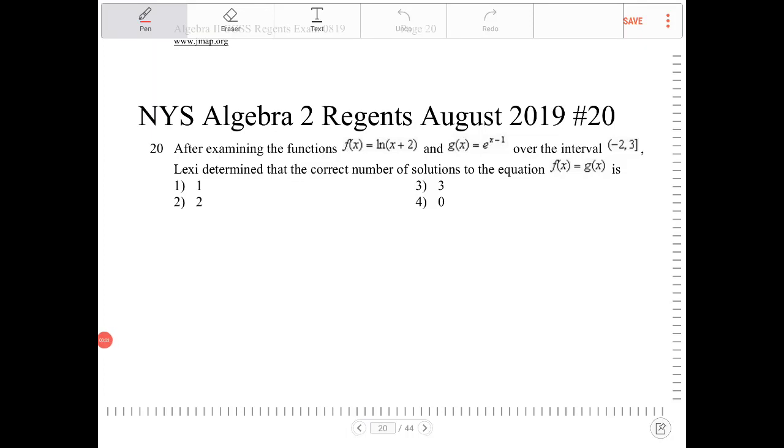After examining the functions f(x) = ln(x+2) and g(x) = e^(x-1) over the interval (-2, 3], Lexi determined that the correct number of solutions to the equation f(x) = g(x) is...